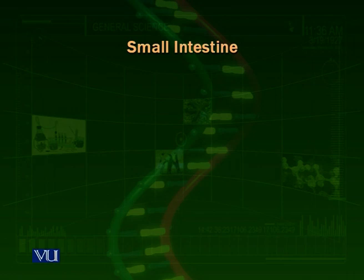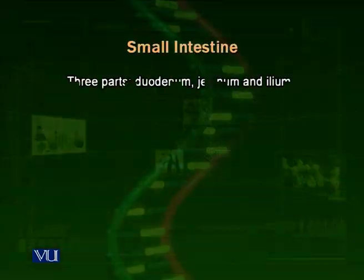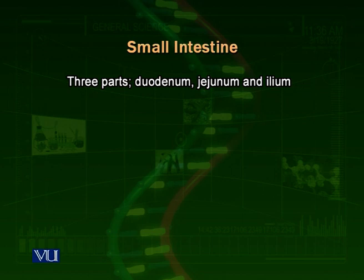The small intestine itself is a very long canal or tube. Its major function is digestion and then absorption of food. The small intestine consists of three main parts: duodenum, the first part; jejunum, the second part; and ileum, the third part.